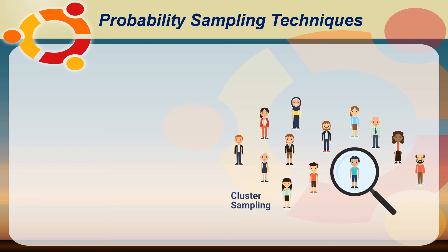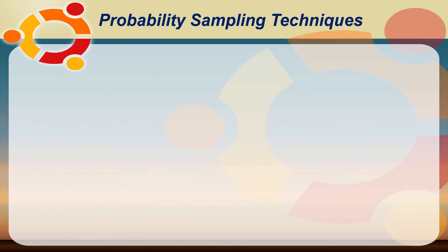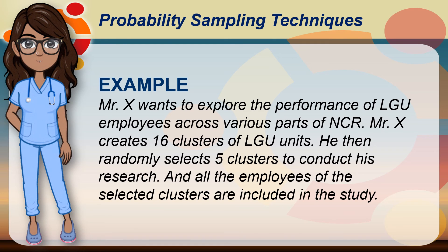The fourth type is cluster sampling. The largest scale surveys use this method. It is used when the target respondents in a research study are spread across a geographical location. In this method, the population is grouped into clusters and simple random sampling is used to select the clusters. For example, Mr. X wants to explore the performance of LGU employees across various parts of NCR. Mr. X creates 16 clusters of LGU units, then randomly selects 5 clusters to conduct the research, and all employees of the selected clusters are included in the study.